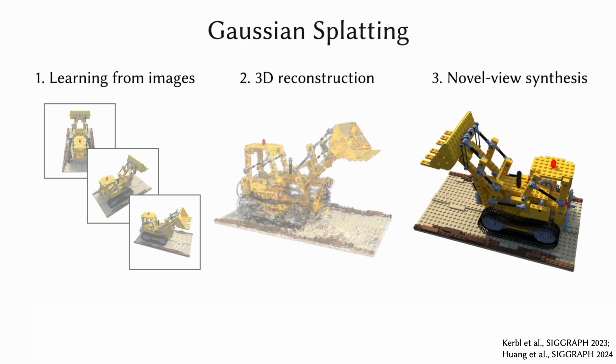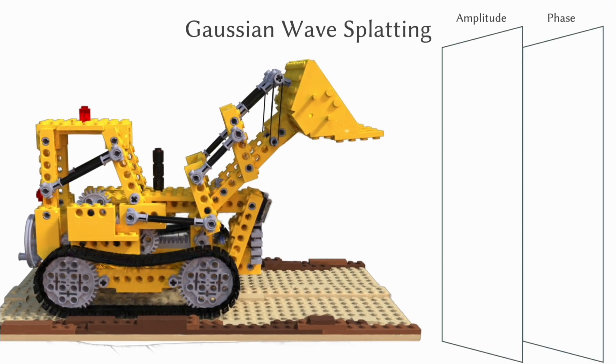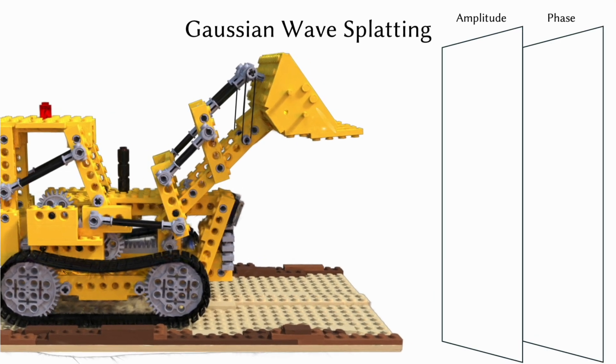Gaussian splatting achieves fast runtime by leveraging an explicit primitives-based representation suitable for a variety of computer vision and graphics tasks. In this work, we develop Gaussian wave splatting, a novel framework to convert optimized Gaussian primitives to holograms.